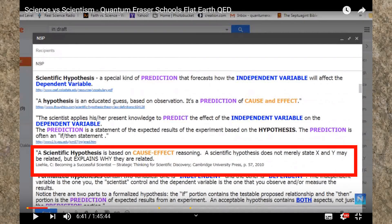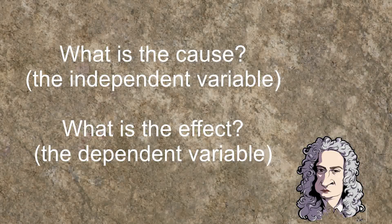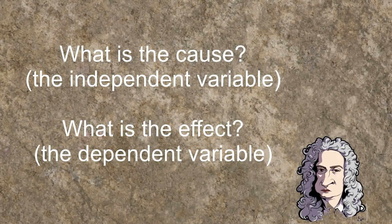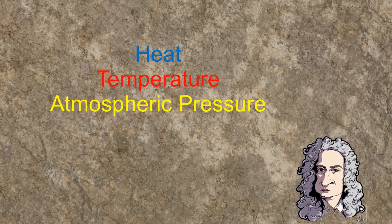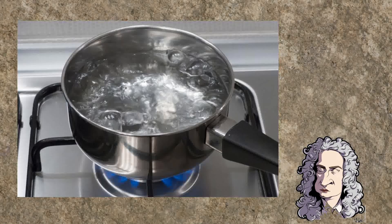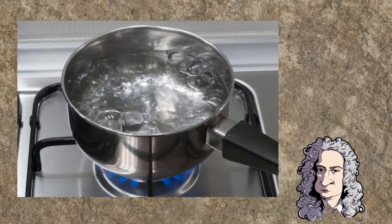QE stated the following about a hypothesis: a scientific hypothesis is based on cause-effect reasoning. A scientific hypothesis does not merely state X and Y may be related, but explains why they are related. So the most important question here is: what is the cause and what is the effect? There are some possible causes of the phenomenon that water boils at 212 degrees Fahrenheit, or 100 degrees Celsius at sea level. First, there is heat. Then there is temperature. And there is atmospheric pressure. The only acceptable effect is that water boils at 212 degrees Fahrenheit, that is 100 degrees Celsius at sea level, at an atmospheric pressure of 101.325 kilopascal or 14.7 psi.